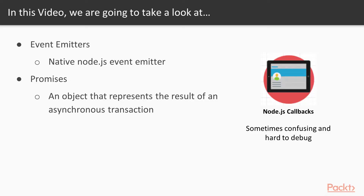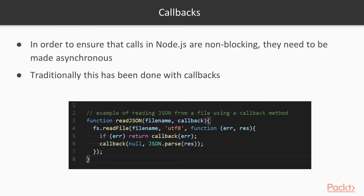In this video we will learn about ways to deal with Node.js callbacks, which are sometimes confusing and hard to debug. We will learn about using event emitters, which are a native Node.js library, or the promises library, which provides an object that represents the result of an asynchronous transaction.